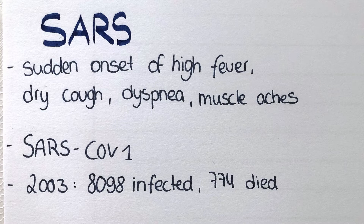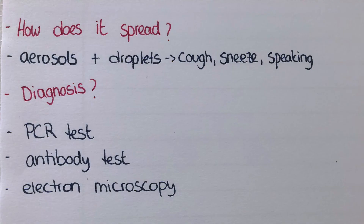There was an outbreak in 2003 in China where a little over 8,000 people got infected and 774 died, a mortality rate of approximately 10%. The virus spreads by aerosols and droplets containing the virus, released when an infected person speaks, coughs, or sneezes. This is where masks are coming in handy as they catch those aerosols or at least part of them.